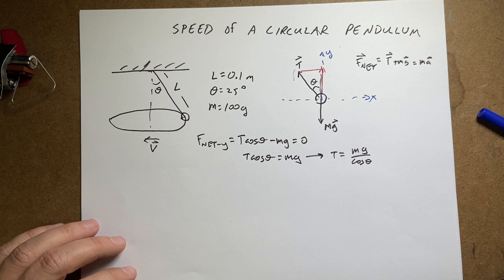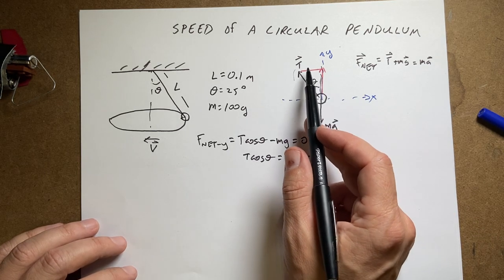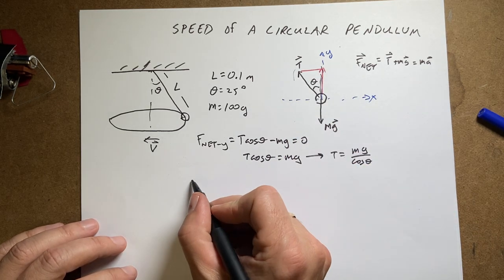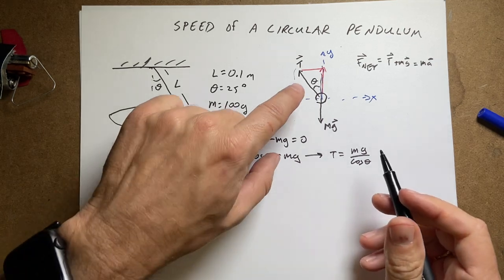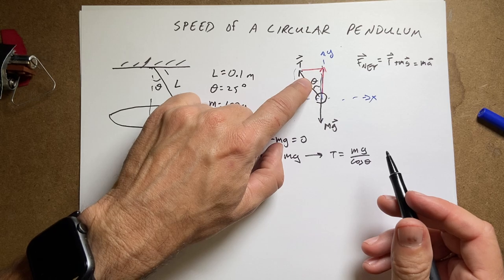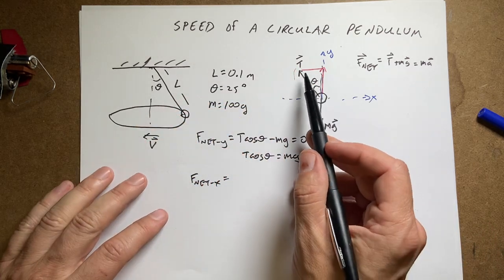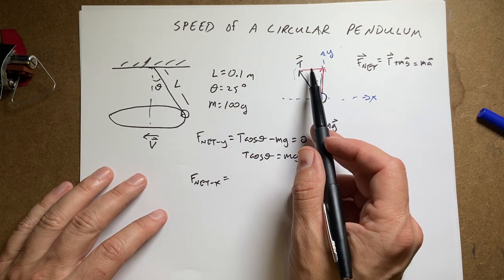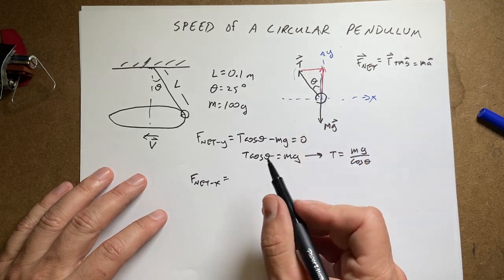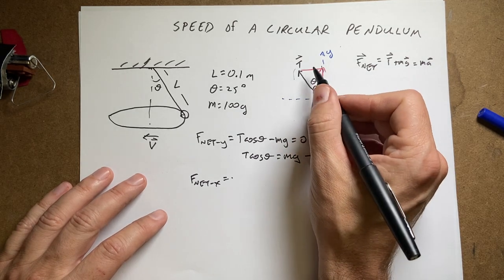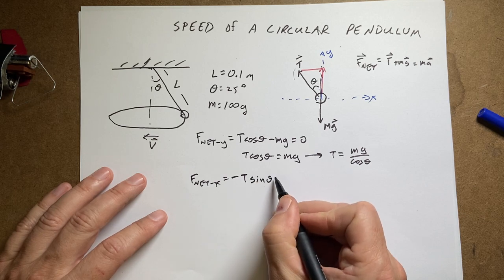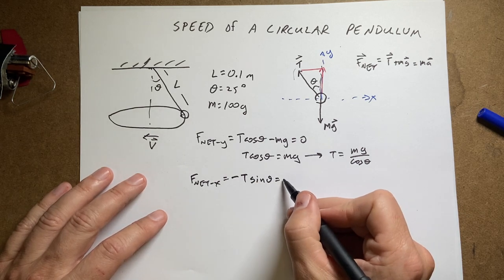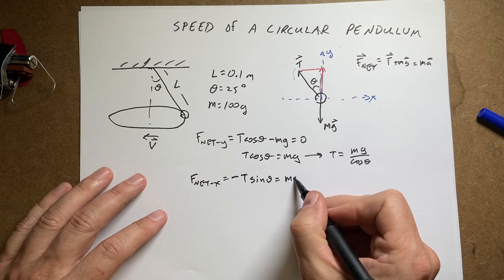Now let's look at the y direction. I mean the x direction. So in the x direction, what forces are there? I can say f net x equals, there's only one force that has a component in the x direction and that's T. So the opposite side of this triangle is the x component of the tension. So that's going to be sine of theta. So this is going to be minus T sine theta. And that's going to be equal to M A x.